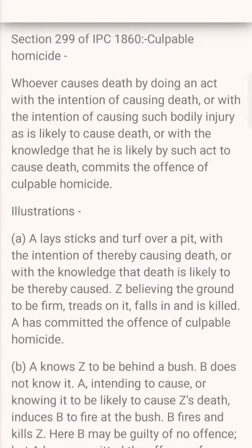दूसरा उदाहरण: A जानता है कि Z एक bus के पीछे है, B यह नहीं जानता। A, intending to cause or knowing it likely to cause Z's death, induces B to fire at the bus. B fires and kills Z. Here B may be guilty of no offense, but A has committed the offense of culpable homicide.